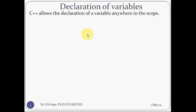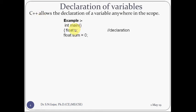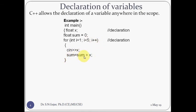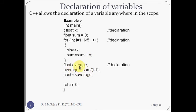Now, declaration of variables. C++ allows the declaration of variables anywhere in the scope, but that is not allowed in C. In C, you can declare variables only at the top of main functions, but in C++ you can declare variables like float x, float sum inside a function, and even inside a loop. This is one advantage of C++. You can also declare float average after performing operations, then cout average and return 0.